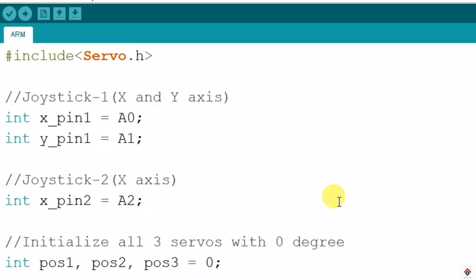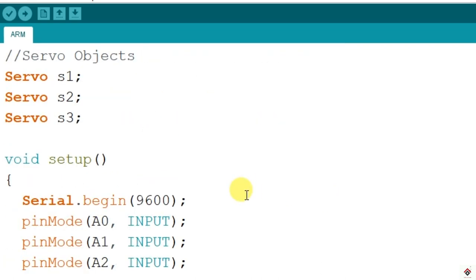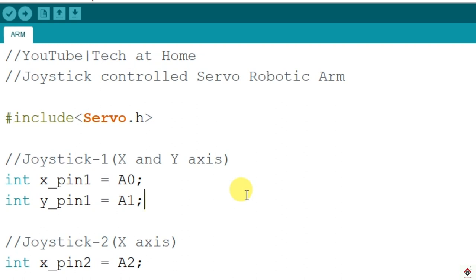Coming to the code, we'll use the basic concept from my previous tutorial where I have already explained how you can control a single servo motor using the joystick. So in this code I'll not go each line, I'll just explain in a brief way what does each section do.